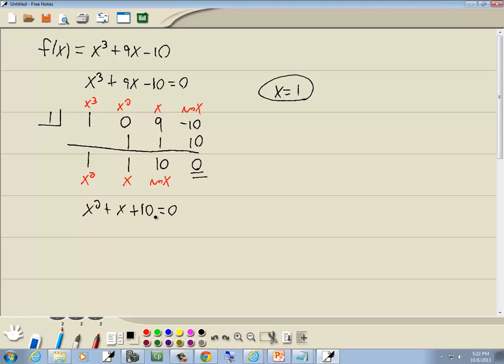Now this won't factor. So we have to use the quadratic formula. A is going to be whatever number is in front of our x squared, which is 1. B is 1. And c is our number at the end, which is 10.